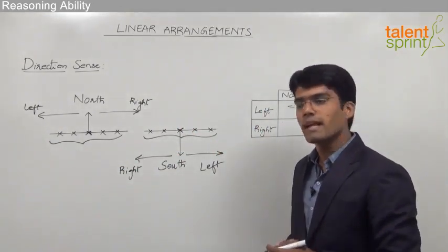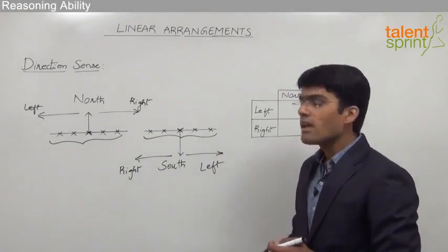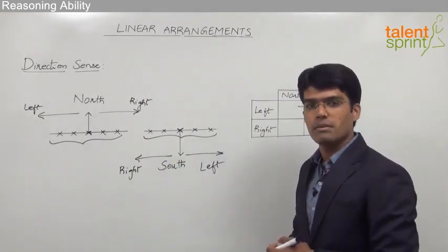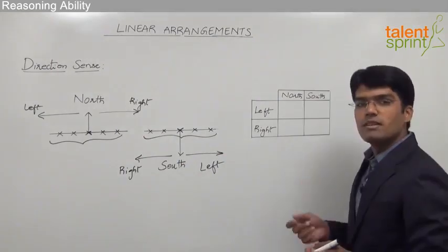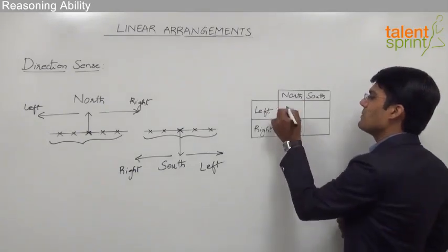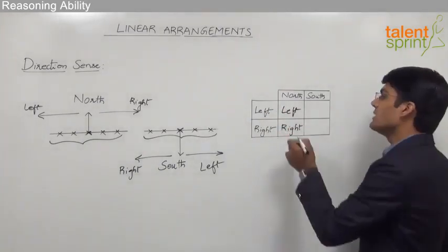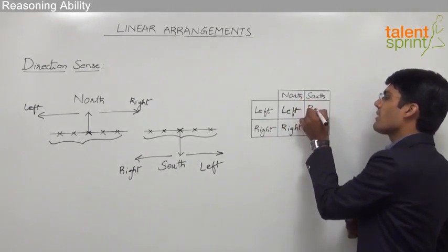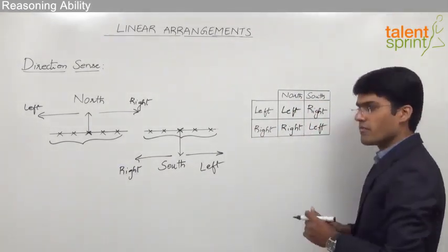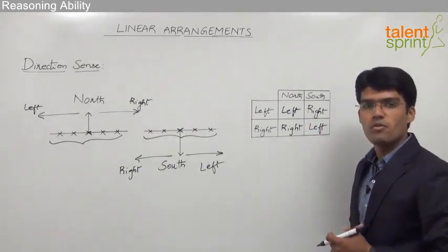So when a person faces north, left of that person is our left and right of that person is our right. But when a person faces south, left and right get interchanged — the person's left will be our right on paper and the person's right will be our left on paper. We can fill this table: when facing north, left is our left and right is our right; when facing south, left is our right and right is our left. This table makes it easy to determine left and right when sitting in a row.